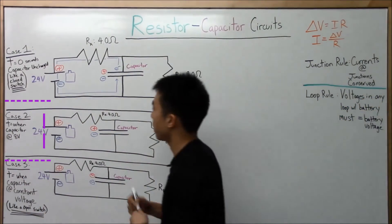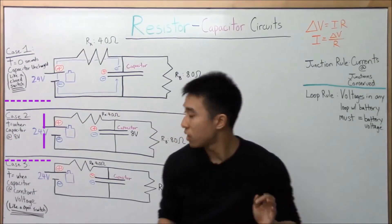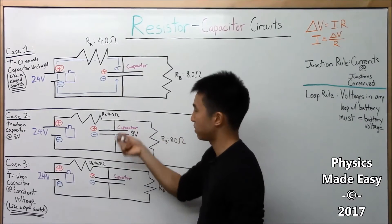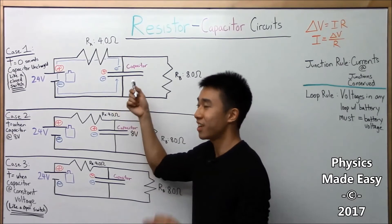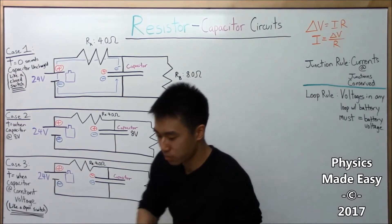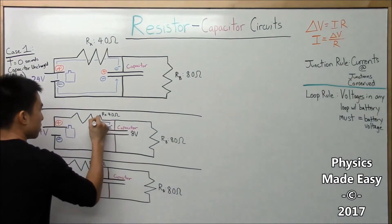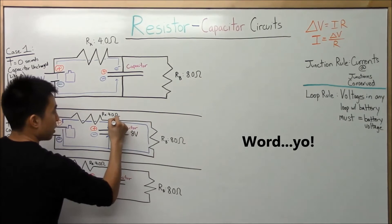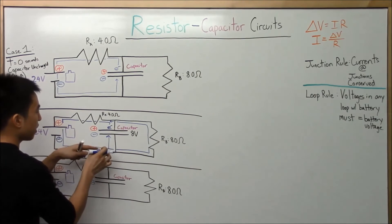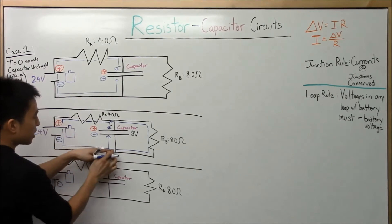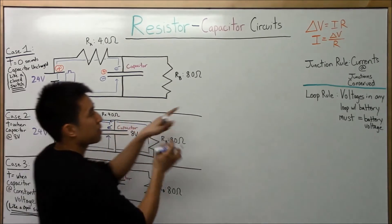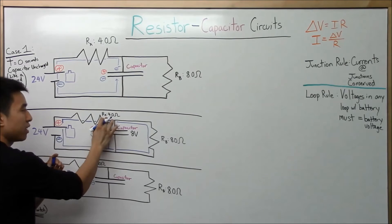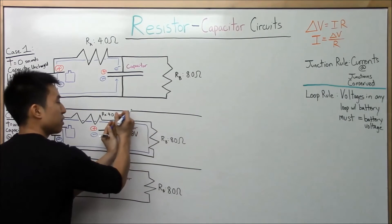At 8 volts, there's definitely current going through both loops, because there's resistance in both paths now — not like before where the capacitor path had no resistance. The electron flow goes down, over here, up here, and also branches out through this loop and rejoins here. The current splits up and meets up again. That's the basis of the junction rule — currents at junctions are conserved, meaning when they separate and meet up again they must add up to whatever it was before, and the total current must equal the sum of the currents of both branches.